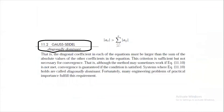Can we apply Gauss-Seidel on any system? No. If applied randomly, results may diverge instead of converge. The diagonal coefficient in each equation must be larger than the sum of the absolute values of the other coefficients in that equation. This criterion is sufficient but not necessary for convergence.